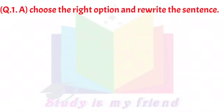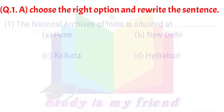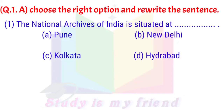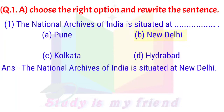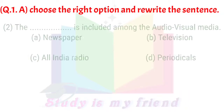Question 1A: Choose the right option and rewrite the sentence. Question 1: The National Archives of India is situated at — A. Pune, B. New Delhi, C. Kolkata, D. Hyderabad. Answer: The National Archives of India is situated at New Delhi.